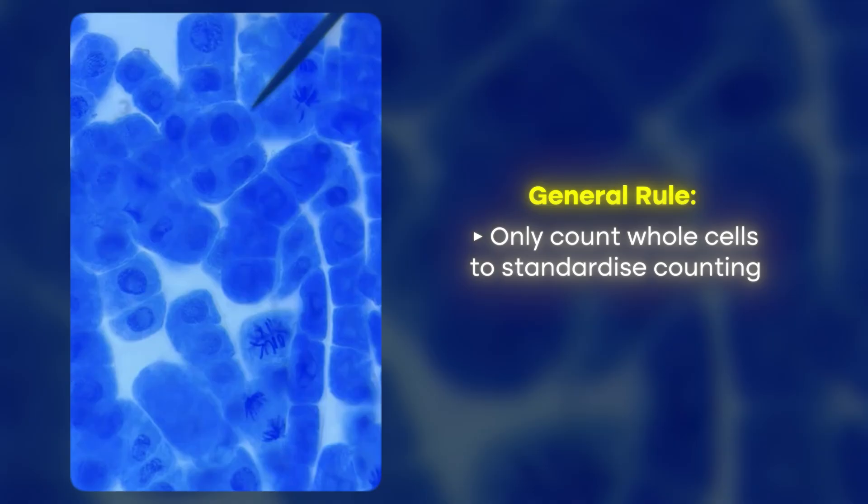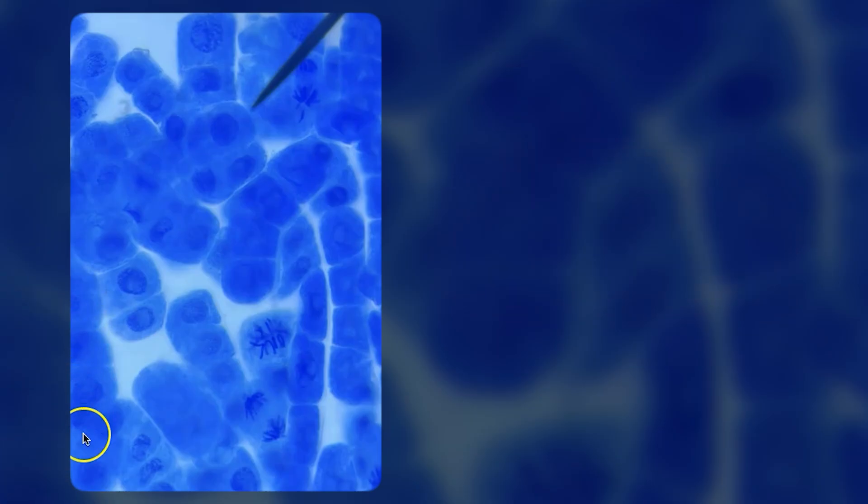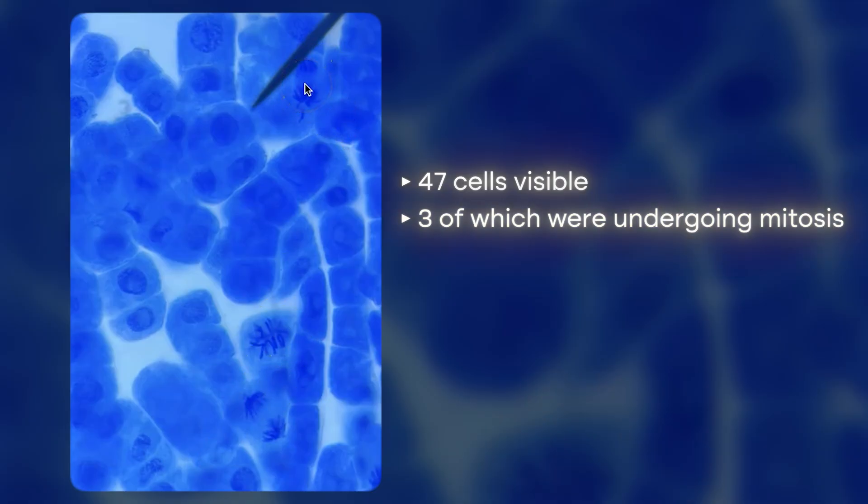That is where I've gone through and counted all of the complete cells. So these I didn't include as complete cells because you can't see the whole thing, and I had 47. And then I've got one, two, three cells that are in mitosis. We've got anaphase, metaphase, anaphase.